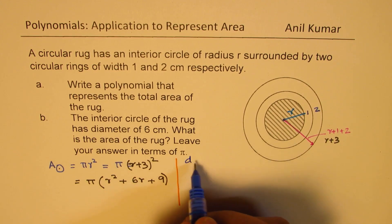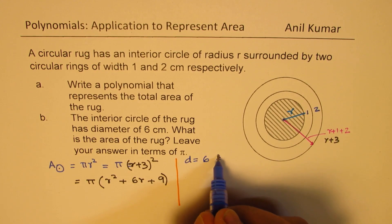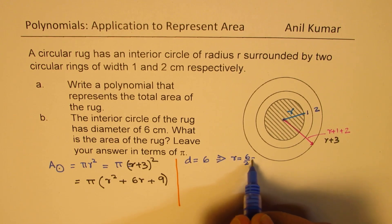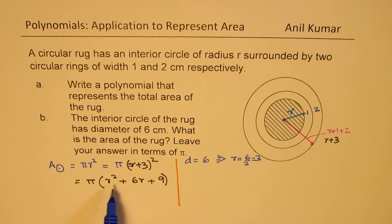So diameter is 6, which gives you that r should be half of 6. 6 by 2, which is 3. So replacing this r with 3, we will get our answer.